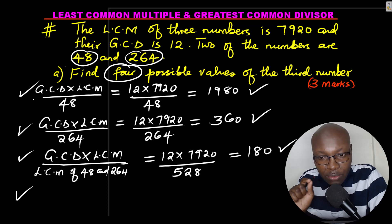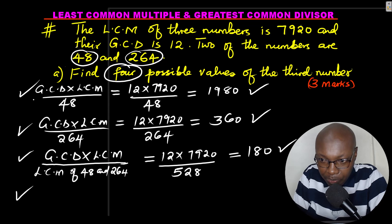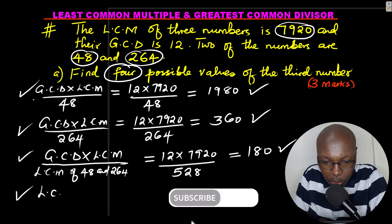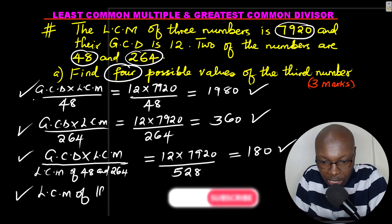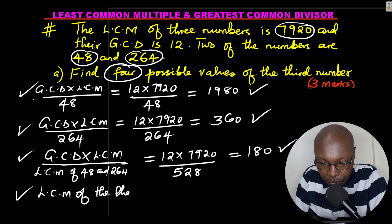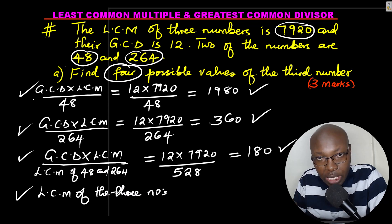...you get it from the LCM, the least common multiple. So the least common multiple of the three numbers is another possible value of that number. So also that one can be possible as that number. So the LCM, you need to calculate. So the LCM of these three numbers is 7920.